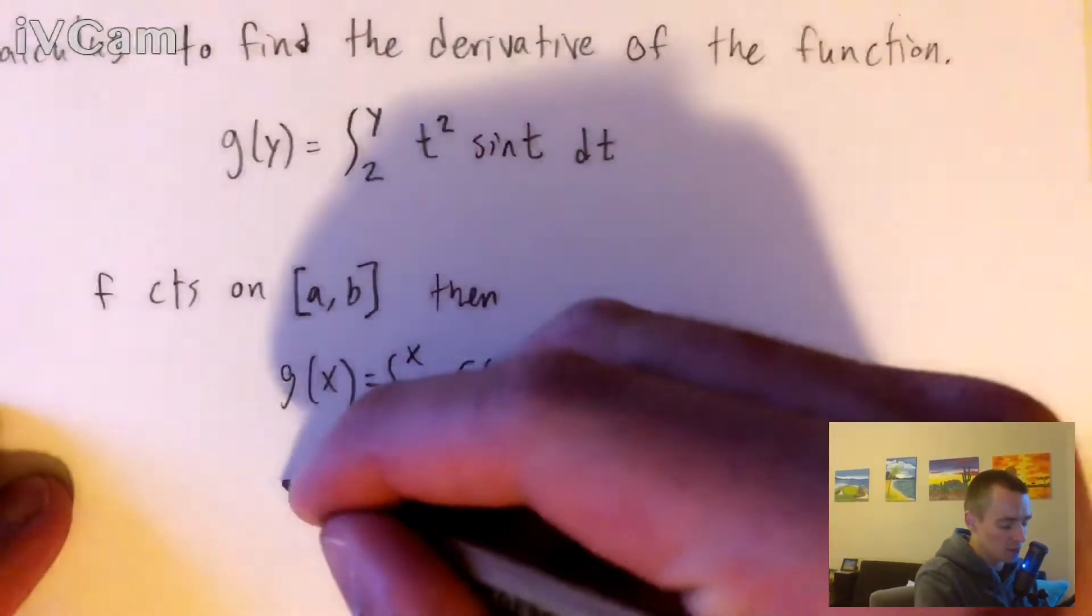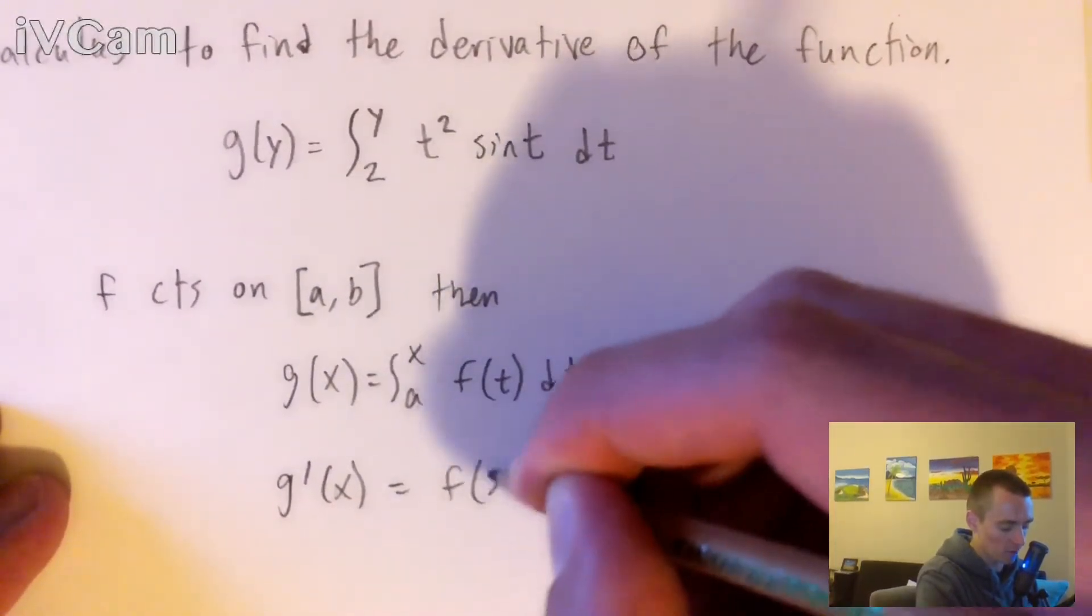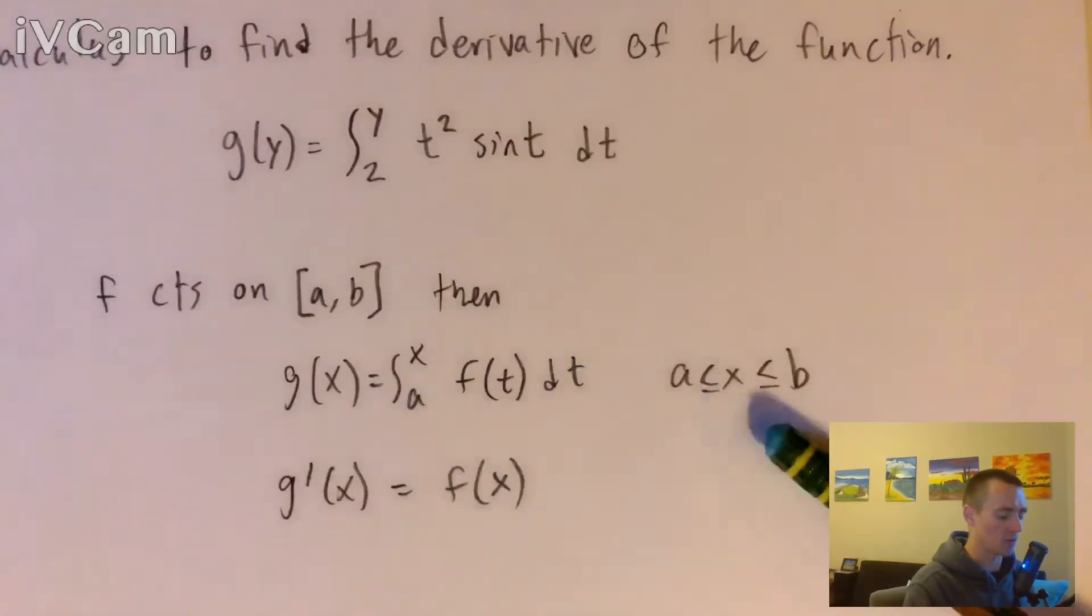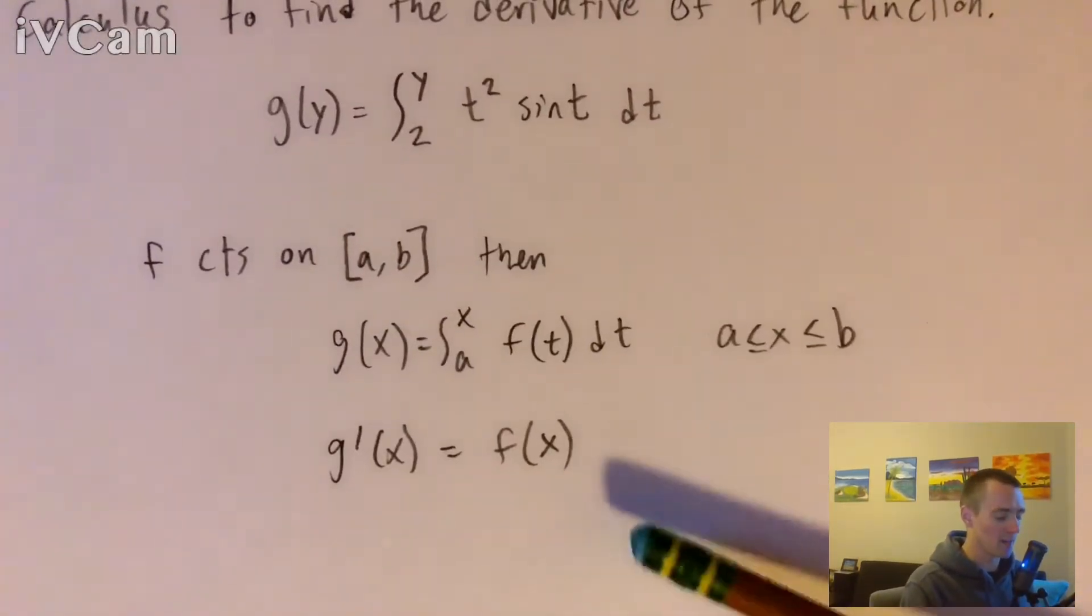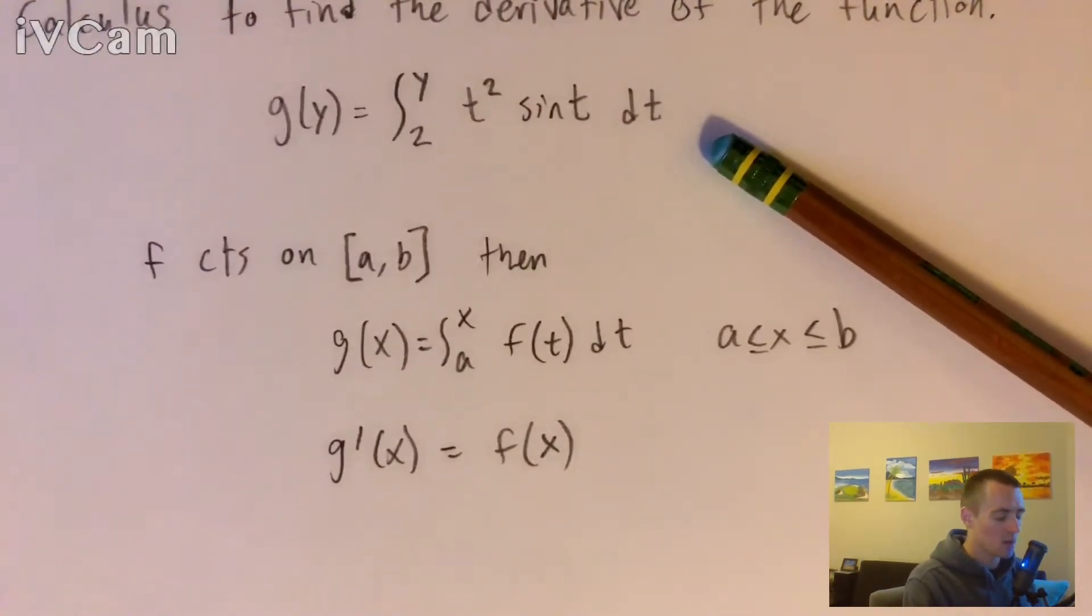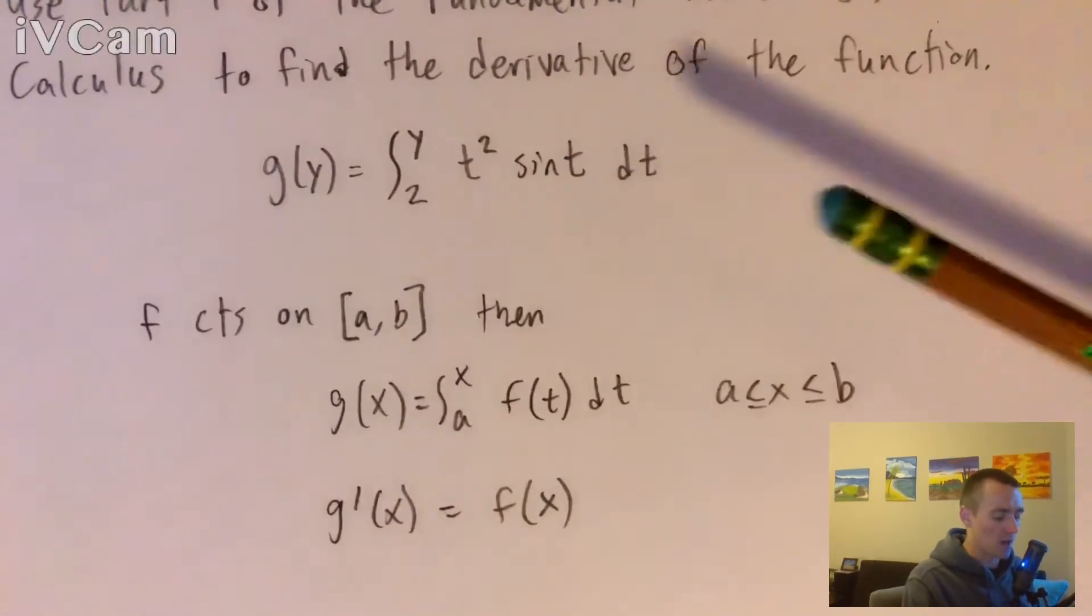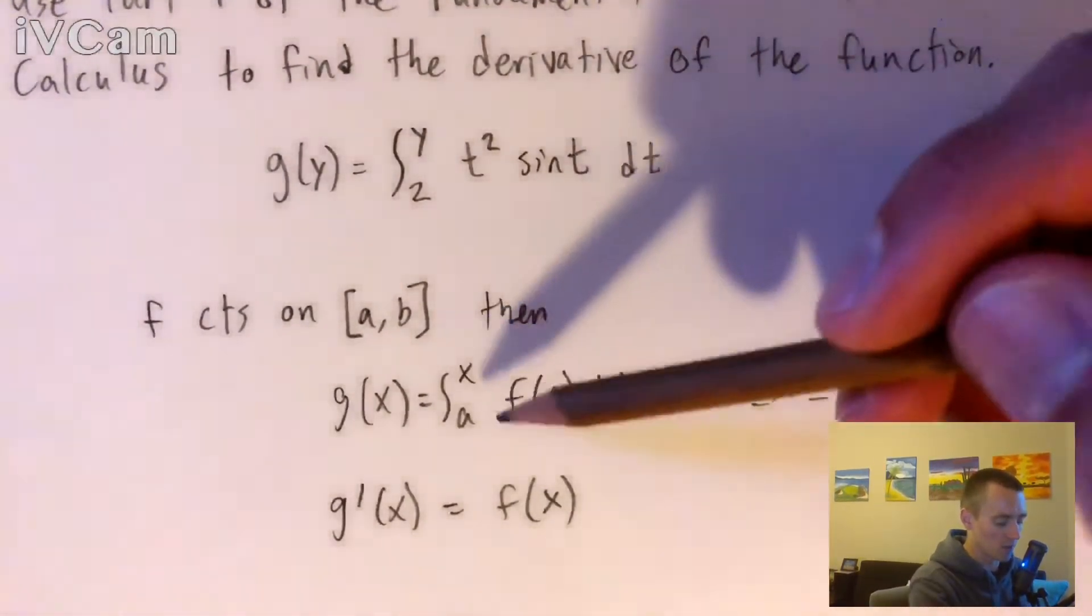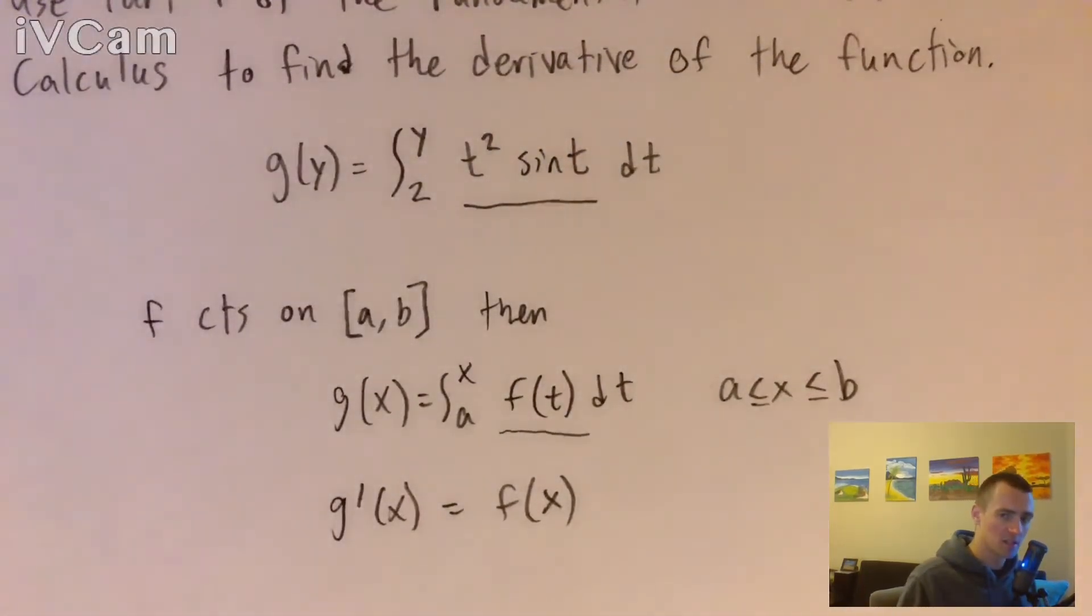which basically just means g prime of x equals f of x. And again, that would be for all x values between a and b. So basically relating that back to this initial function that we have. First of all, we need to make sure that our function f, which is this function here within the integral, is continuous for all x's between a and b.